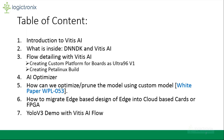First, we'll go into the introduction to Vitis AI. Then we have what is inside the DNN DK and Vitis AI. After that, we'll discuss about the flow detailing with Vitis AI and how we can create a custom platform for boards such as Ultra96 and PetaLinux build to boot an embedded system where we can implement our Vitis AI models. Then we'll look into a high-level overview of AI optimizer, a pruning tool from Xilinx, and some other methods regarding pruning, including optimizing and pruning the model using custom neural network trained models, which we have included in our white paper WPL-053. We'll also see how to migrate edge-based design for edge devices into cloud-based cards and FPGA. Finally, we'll see the YOLO v3 flow in Vitis AI.